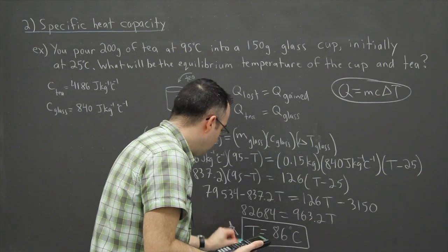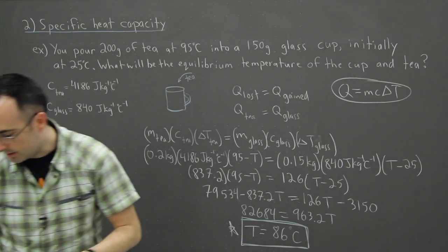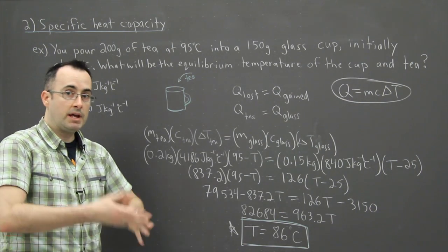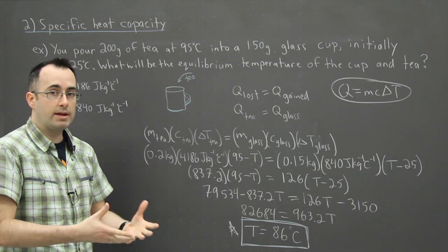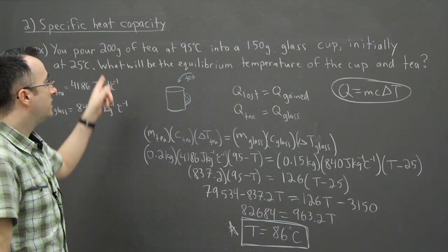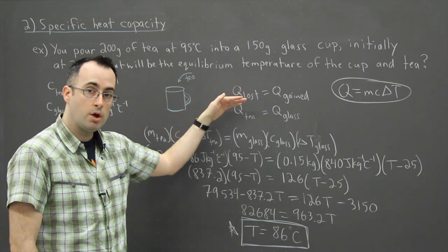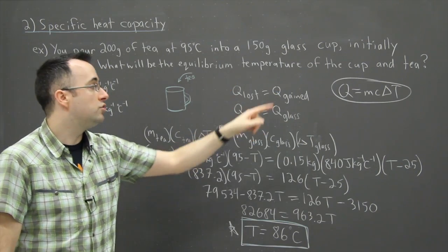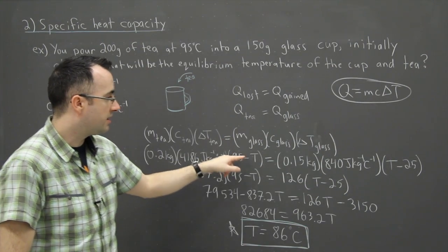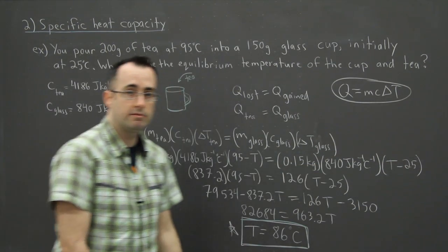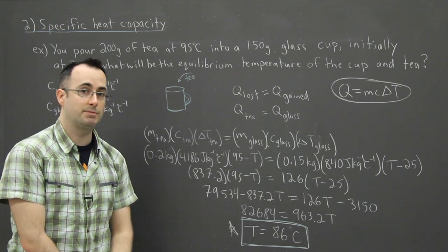It may have seemed a little bit annoying with all the units and things to take care of, but the key to solving this potentially really nasty looking question is just understanding and recognizing that when you look at specific heat capacity, all you have to do is keep track of which one loses energy, which one gains energy, and use your equation for specific heat capacity. In the end, you can solve all sorts of crazy looking questions just by using specific heat capacity.